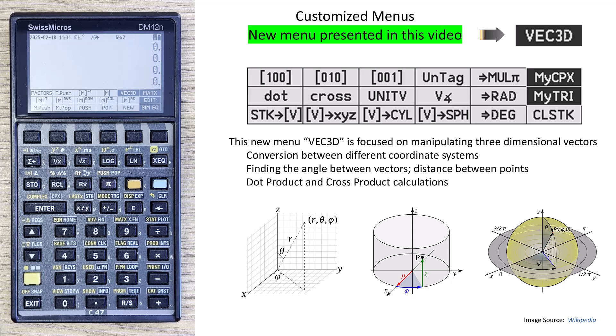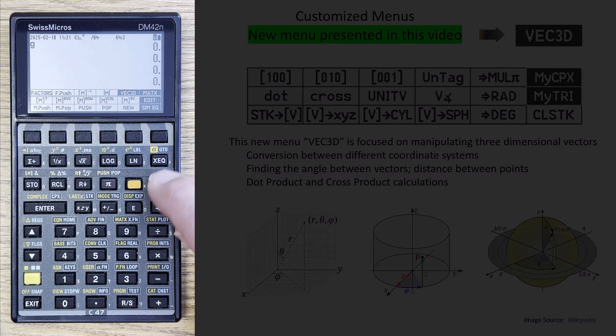Complex numbers are two-dimensional vectors in one way of thinking, and 3D vectors are implemented as a 1 by 3 matrix, so it makes sense to put it in both places. But let's just jump into the menu.